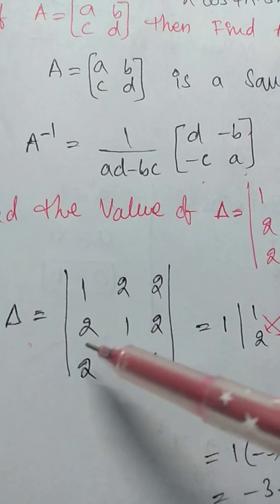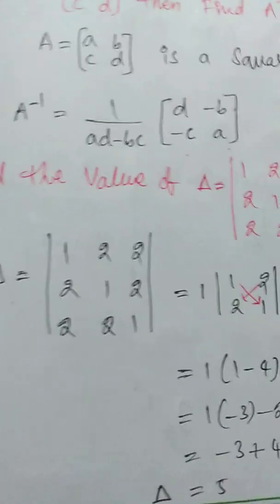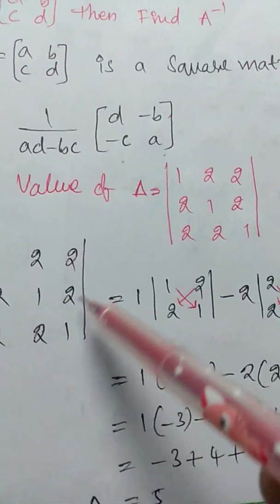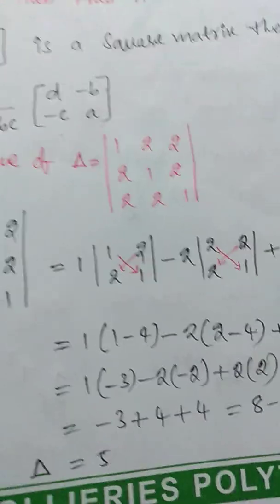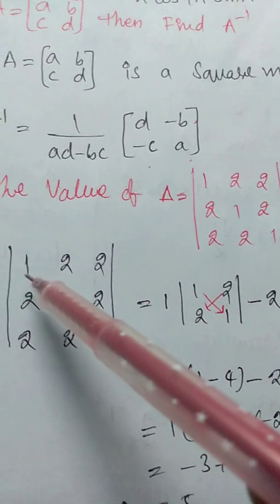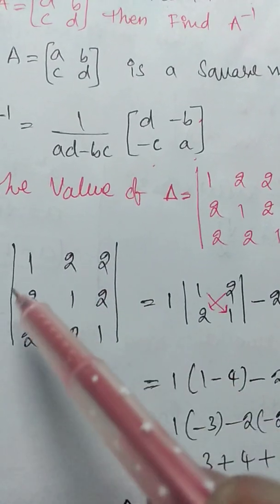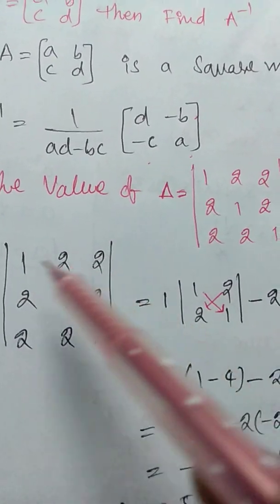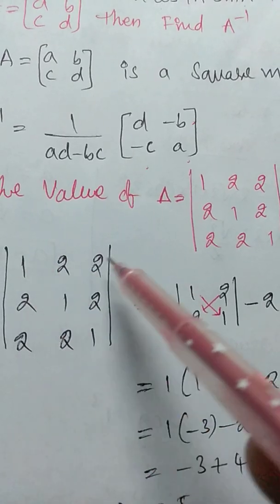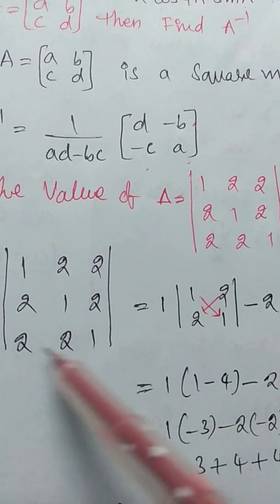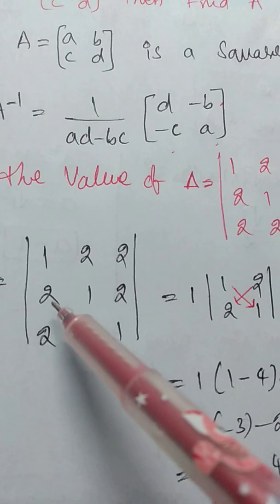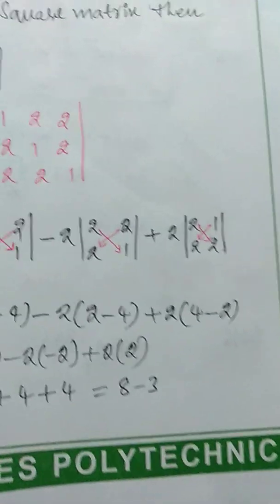Write the delta value: determinant of [[1, 2, 2], [2, 1, 2], [2, 2, 1]]. Expanding along the first row: 1 into cofactor of 1 — deleting the row and column we get determinant of [1, 2; 2, 1]. Minus 2 into cofactor of 2 — deleting the T-shape we get determinant of [2, 2; 2, 1]. Plus 2 into cofactor of 2 — deleting the 7-shape we get determinant of [2, 1; 2, 2].